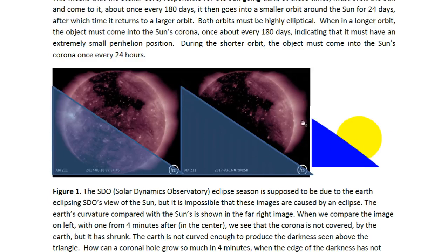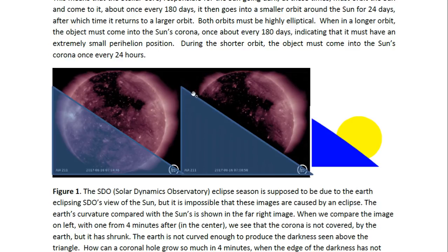We start by comparing the Earth's curvature with the sun's curvature, as illustrated here on the right-hand side. The Earth's curvature is almost that of a straight line, so we can approximate the Earth — which would be covering part of the sun to produce the image where part of the sun is dark — with a triangle. If the Earth were covering this part of the sun, these two images being four minutes apart, we would see the corona above the line. But that's not what we see — the corona is not there, and the corona visible elsewhere is missing there.